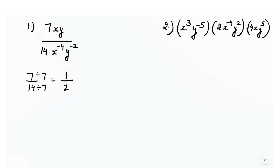Now after that, we have to solve the like terms. The like term here is x over x raised to power negative 4. We have to use the rule of division which says a raised to power m over a raised to power n equals a raised to power m minus n.